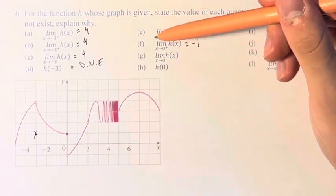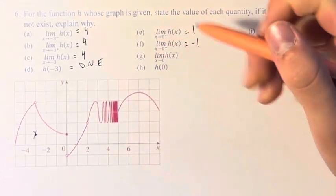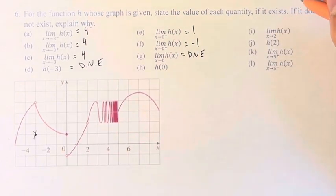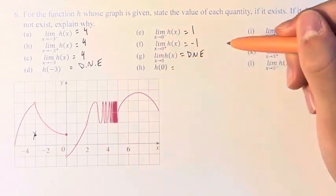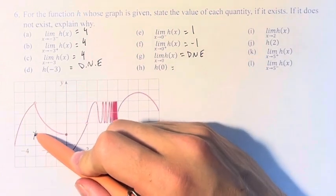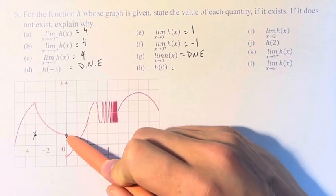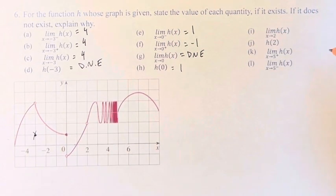Therefore, since the function does not approach the same value from the left and the right, the limit does not exist, DNE. However, h of 0 does exist because we need a closed circle here for it to exist. Over here we have that closed circle at a y value of 1. That means that h of 0 is equal to 1.